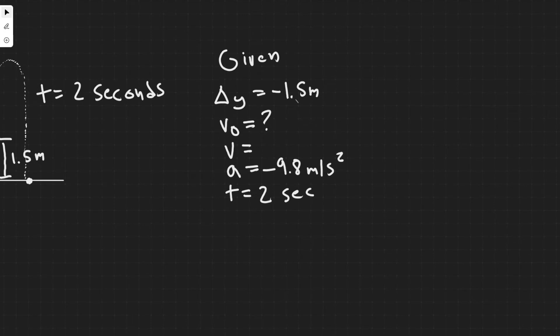And then now what you should notice is in order to solve for a variable using the kinematic equations, you need to have three variables. So in order to find v sub 0, we need three, which we do have three, so I know that I'm going to be able to solve it just by plugging it into one of the kinematic equations.